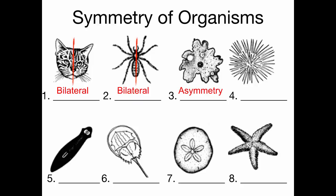This is a sea urchin — you may have seen it near the ocean, they're spiky. But if you look at them carefully, they have radial symmetry. All those spikes are arranged in a circular pattern around the sea urchin.